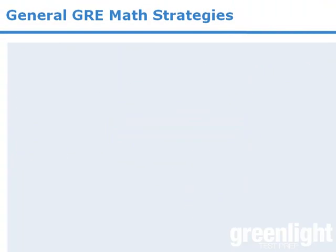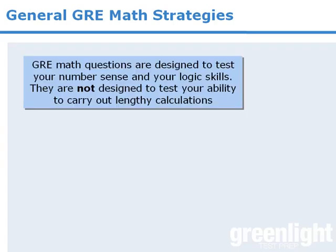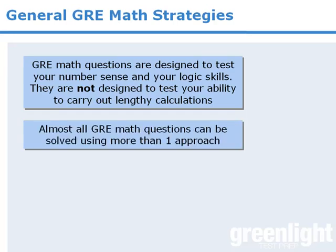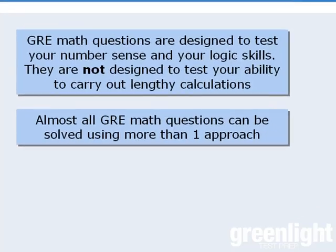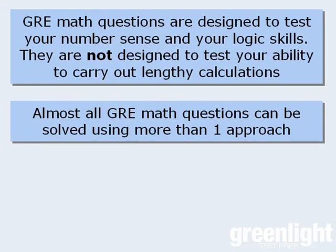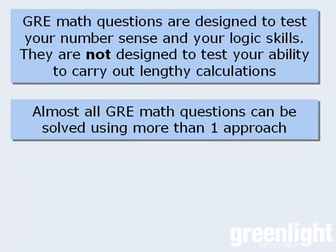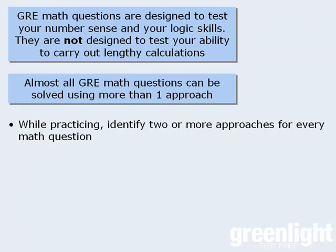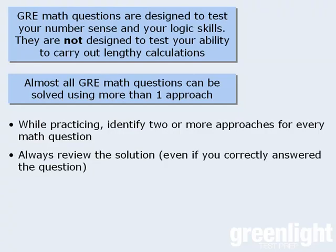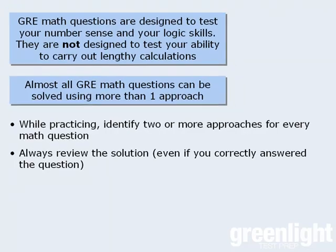The important takeaways of this lesson are that you typically should not have to perform a lot of lengthy calculations on GRE math questions, and that almost all questions can be solved using more than one approach. These two facts should have a significant effect on the way you take the GRE and on the way you prepare for it. While you're practicing, you should always try to identify at least two approaches to every question. Also, be sure to review the solutions to every question, even if you answered it correctly — doing so may suggest an even faster way to solve the question.